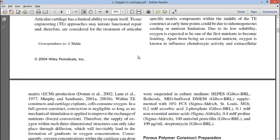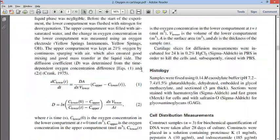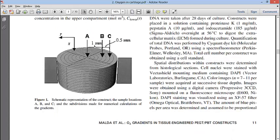From there, they made a construct shown here in Figure 1, a cylinder construct where the cells were incubated in the polymer. Oxygen was allowed to diffuse down the surface here, but oxygen was not allowed to diffuse through the side walls or the bottom.